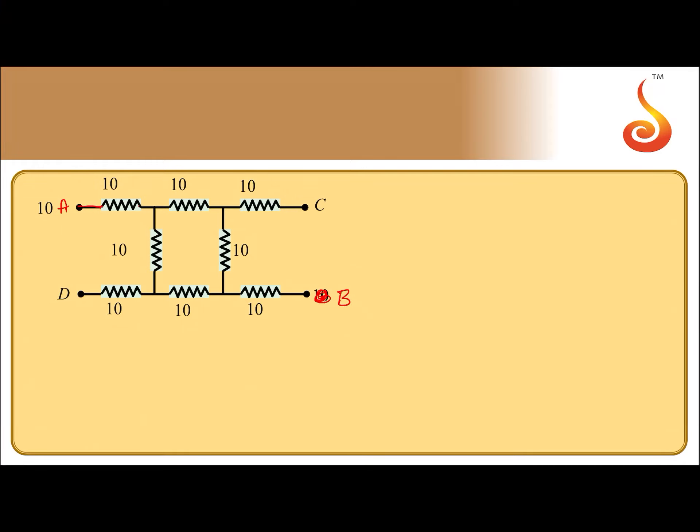When you travel from A to B, you will go along this 10 ohm resistance, then there is a split in the path. Either you can go this way or you can go this way—your destiny is to reach point B.